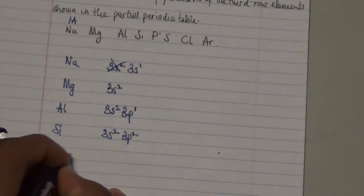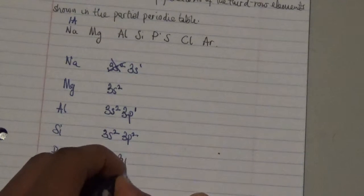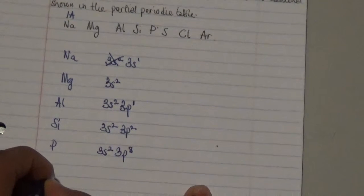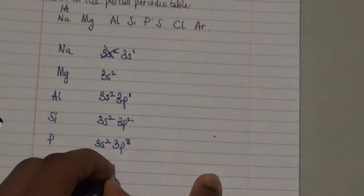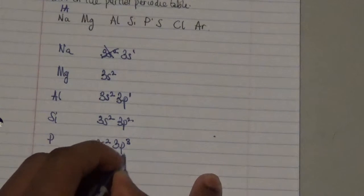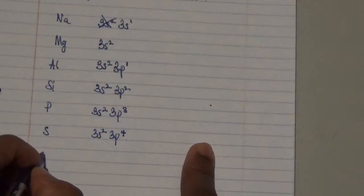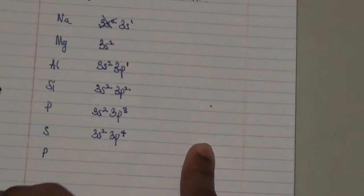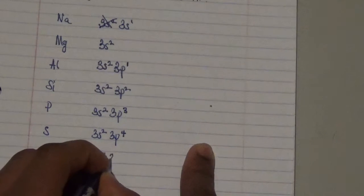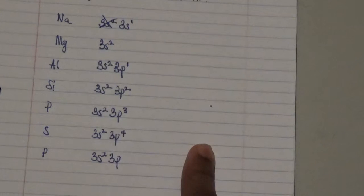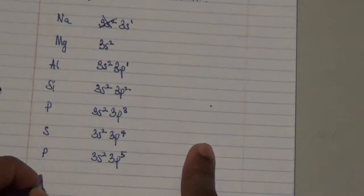Next and foremost we have phosphorus 3s2, 3p3. Then we have sulfur which has 3s2, 3p4. We have phosphorus. We have 3s2, 3p5.